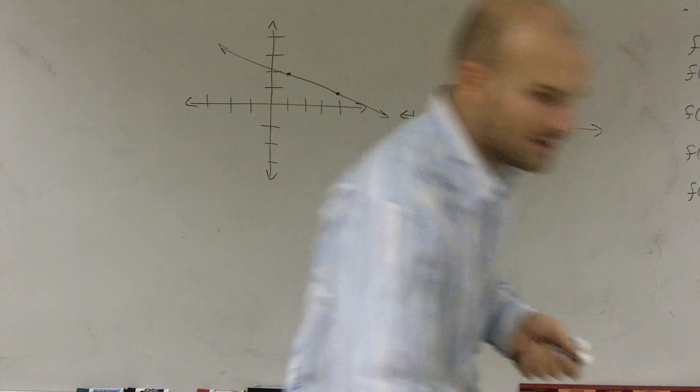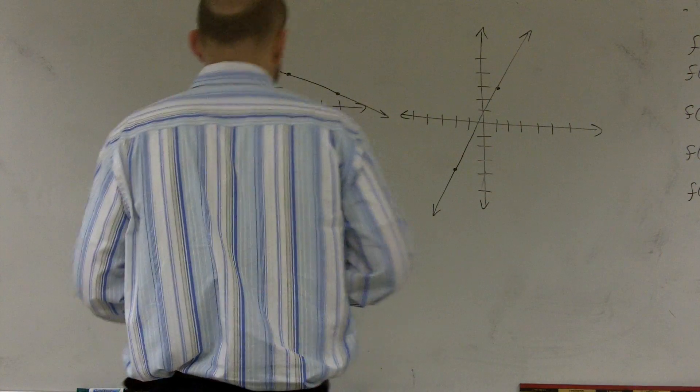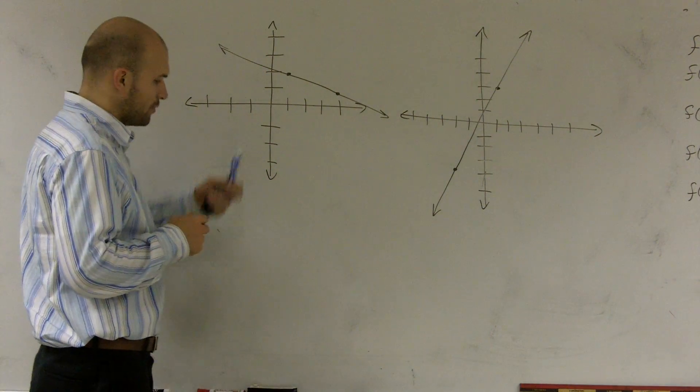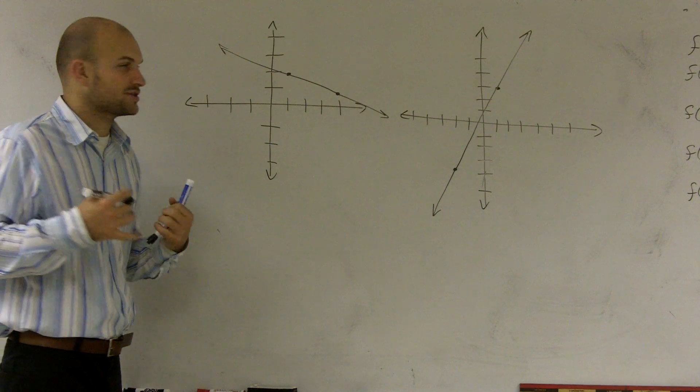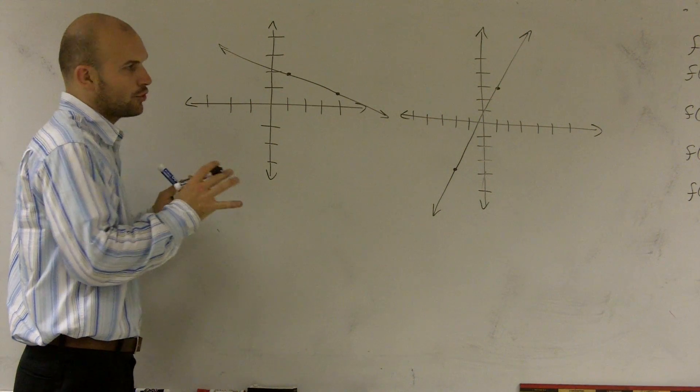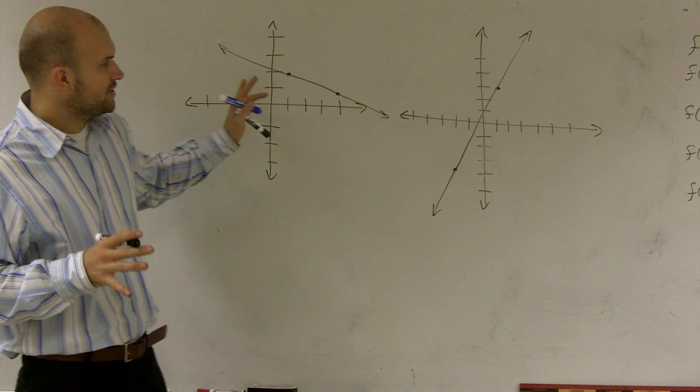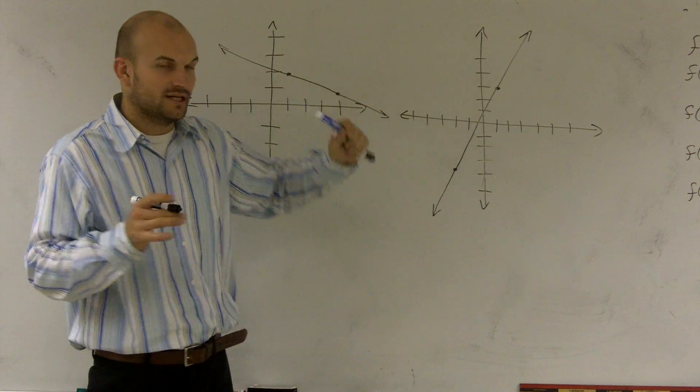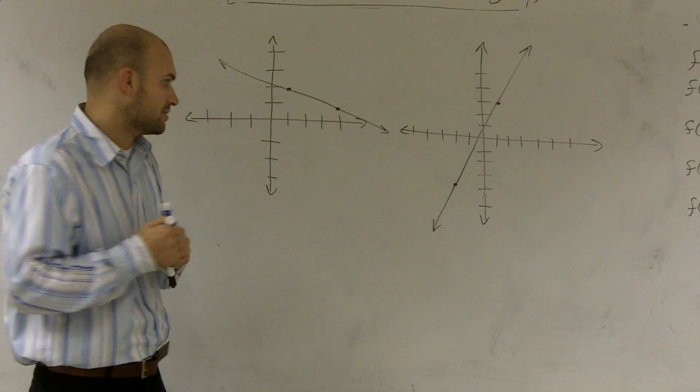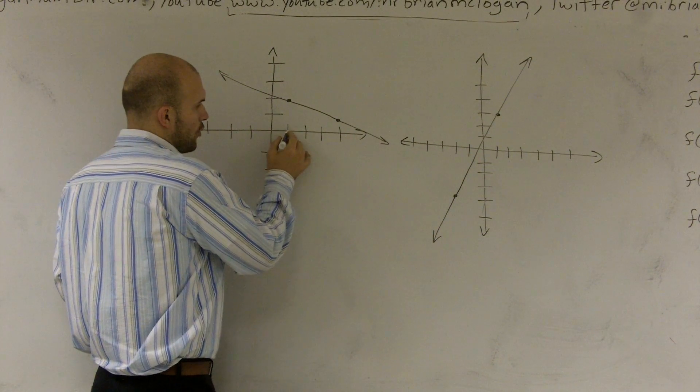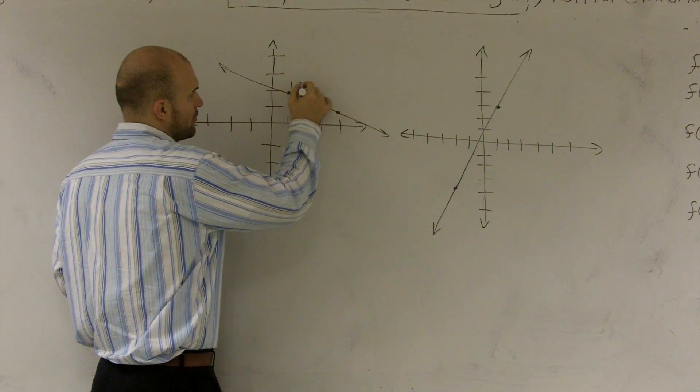So a very helpful tool a lot of times is to do what we call a slope triangle. If I have a point, first thing I want to do is let's determine actually what are my coordinates up here. When you're given a graph, you need to determine at least two points to find the slope. So over here, I'm going over one, up two. So this is my point one comma two.